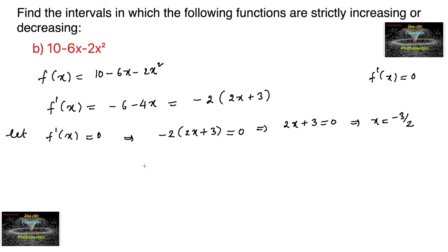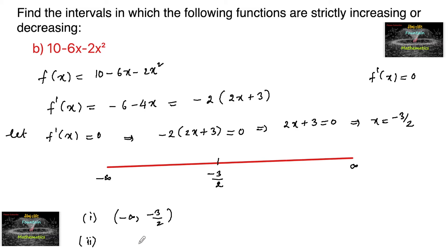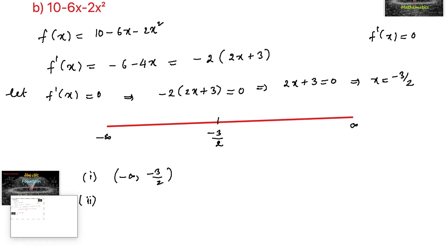This value negative 3 by 2 will divide the real number line, which goes from minus infinity to plus infinity, into two parts: from minus infinity to minus 3 by 2, and from minus 3 by 2 to plus infinity. These are the two intervals.